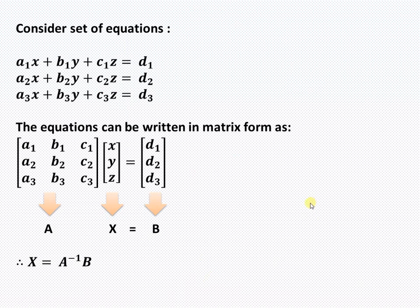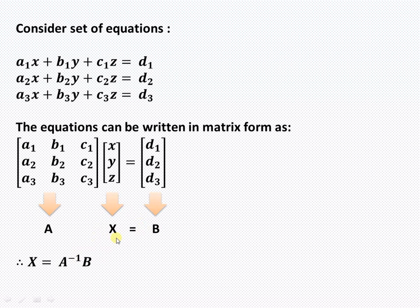For a general set of equations a1x + b1y + c1z = d1, the matrix form is AX = B, where A is the coefficient matrix, X is the variable matrix, and B is the matrix of constants. The solution is obtained by X = A⁻¹B.